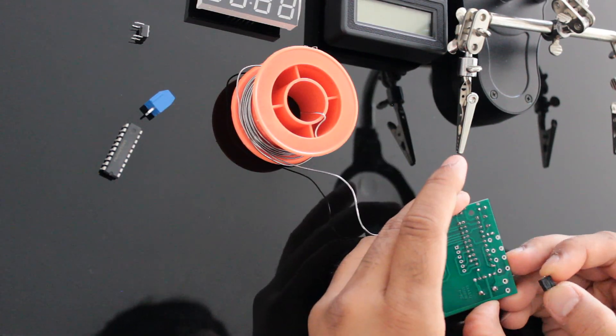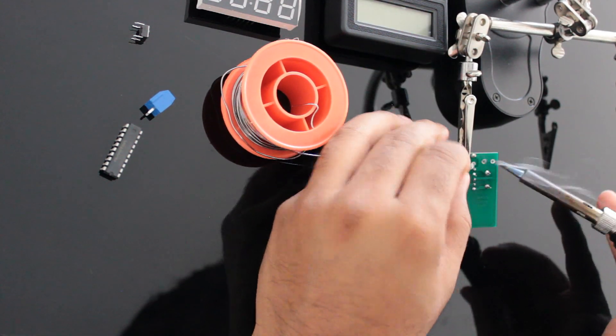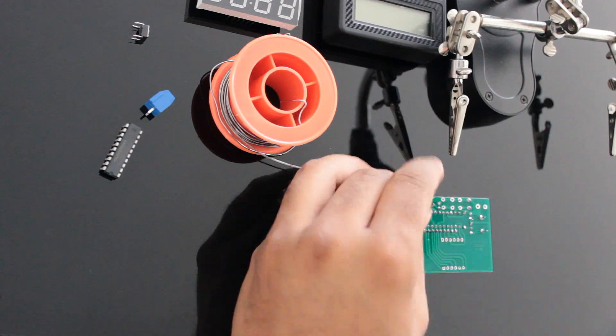After that I'm soldering the two push buttons and the screw terminal block. I really don't like the concept of having the buttons in the front, so I'll later move them to the back of the unit.